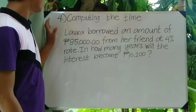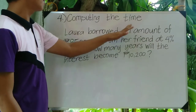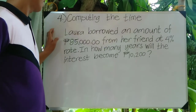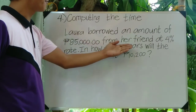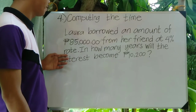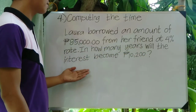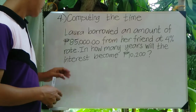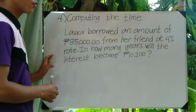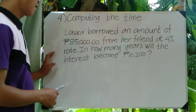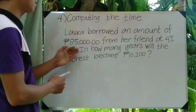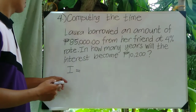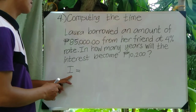For situation number four, our purpose is computing the time in simple interest. The problem: Laura borrowed 85,000 pesos from her friend at a 4% rate. In how many years will the interest become 10,200? We will use the same formula: I equals P times R times T. First, identify the given.